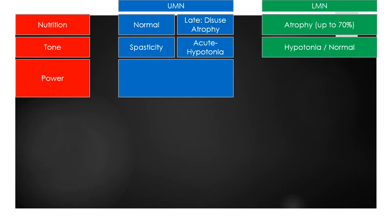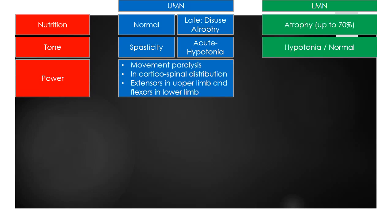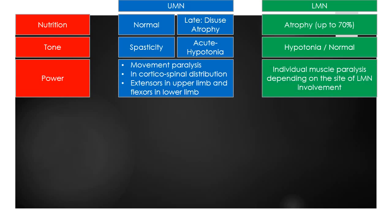In UMN lesions, there is movement paralysis occurring in corticospinal distribution, i.e., extensors in the upper limb and flexors in the lower limb. In LMN lesions, individual muscle paresis occurs depending on the site of LMN involvement.